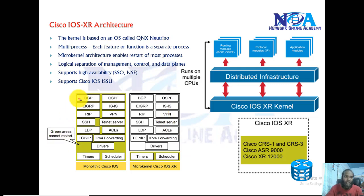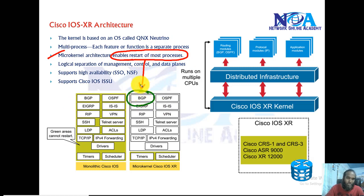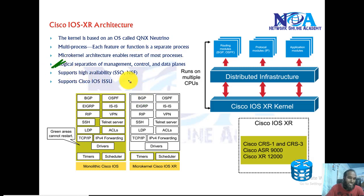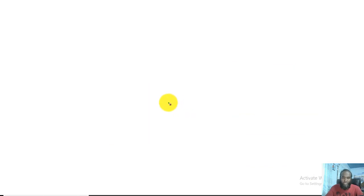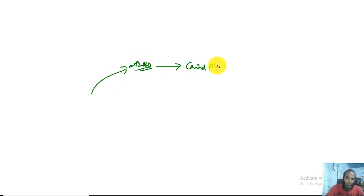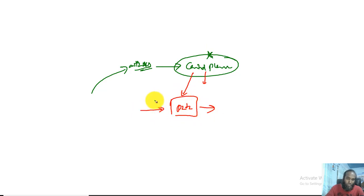The microkernel architecture enables you to selectively restart specific processes without restarting the complete router or device. It also allows you to logically separate the management plane, control plane, and data plane. In most IOS routers, attacks on the control plane — which is responsible for building routing tables — can also impact the data plane, which handles packet forwarding.